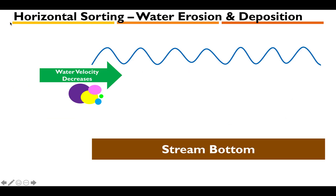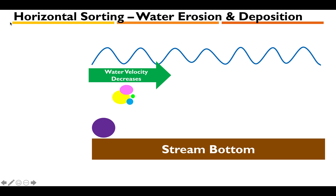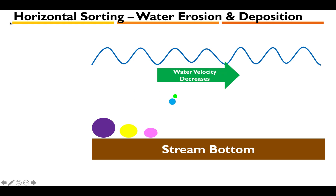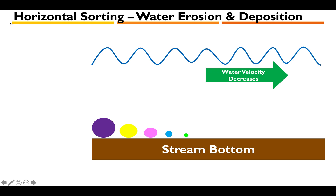Here's a visual of this in real time. At the top we have a blue squiggly line representing the surface of the water, a stream bottom, and different colored sediments of different sizes. Over time, as the water is flowing and starts to decrease its velocity, the largest sediment drops first, then the next largest, and so on in order. That's called horizontal sorting — as your water velocity slows down, you get deposition in size order.